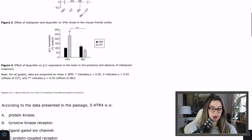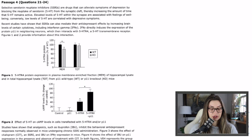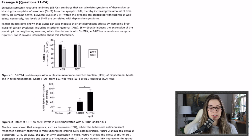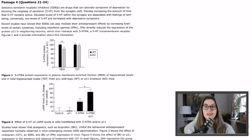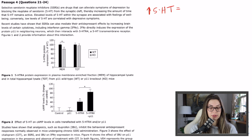I always like to look and see if there's a title, and there's not. The passage starts: selective serotonin reuptake inhibitors, or SSRIs, are drugs that can alleviate symptoms of depression by blocking the reuptake of serotonin (shortened as 5-HT) from the synaptic cleft, thereby increasing the amount of time serotonin remains active. Elevated serotonin is associated with well-being; low serotonin is correlated with depressive symptoms — increased serotonin equals happy, low serotonin equals sad.